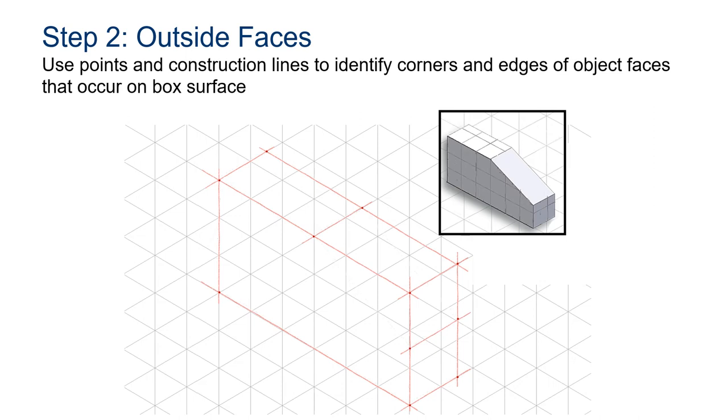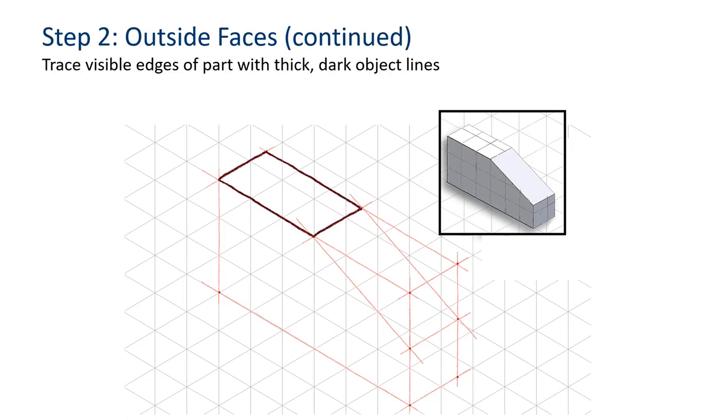Use points and construction lines to identify corners and edges of object faces that occur on the box surface. So you could put the points there, and that'll help you determine where to draw this diagonal line. And this is that isometric paper that I was talking about before, by the way. But you don't need the isometric paper in order to do this.